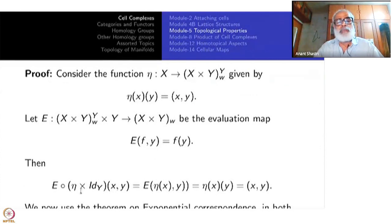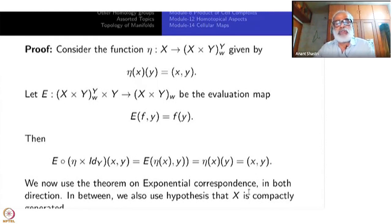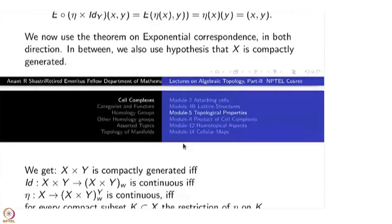Look at E composed with (Eta cross identity of Y). We get E(Eta(x), y) by definition — Eta cross identity means that. Eta is evaluation: you evaluate Eta(x) on y to get (x, y). We now use the theorem on exponential correspondence in both directions, using the hypotheses that X is compactly generated and Y is locally compact.